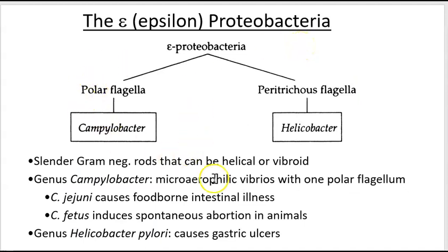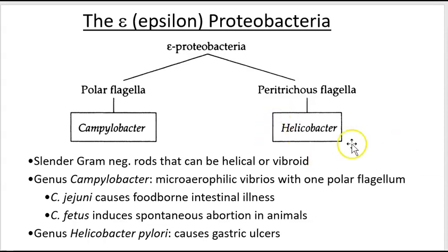The epsilon proteobacteria are gram-negative rods. Campylobacter causes intestinal diseases and can cause spontaneous abortion in animals, spreading through pig colonies. Helicobacter is responsible for causing ulcers — scientists in Australia received the Nobel Prize for finding that ulcers weren't just caused by stress but by bacteria aggravating the stomach lining, causing gastric ulcers. Treatment is now antibiotics rather than drinking milk, which can actually aggravate the situation.